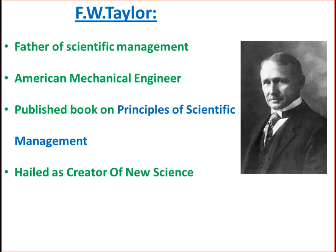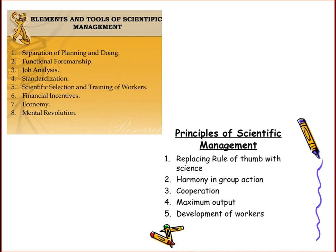Taylor published books and papers explaining his radical views on industrial organization and management. Shop management, piece rate per system, and principles of scientific management were his major contributions to management thought, and he came to be recognized as the father of scientific management and creator of a new science. Taylor contributed to scientific management in two ways: he gave elements and tools of scientific management, and he also gave principles of scientific management.